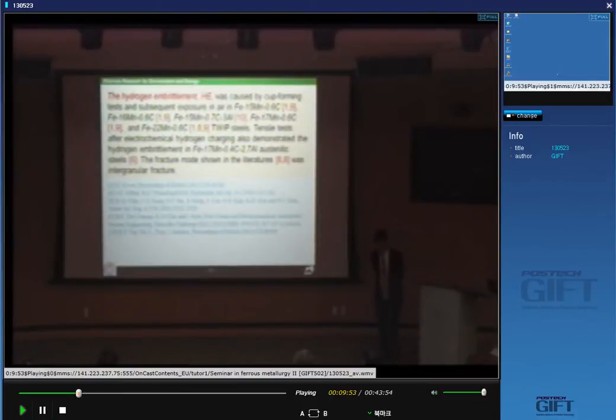Hydrogen embrittlement is the topic of my talk, which is caused by cap forming in case of TWIP steel. Cap forming and subsequent exposure, the edge of a cap has many cracks. It was found in 15 manganese 0.6 carbon steel, 16 manganese 0.6 carbon steel, 15 manganese 0.7 carbon 3 aluminum steel, 17 manganese 0.6 carbon, and more stable 22 manganese 0.6 carbon TWIP steel.